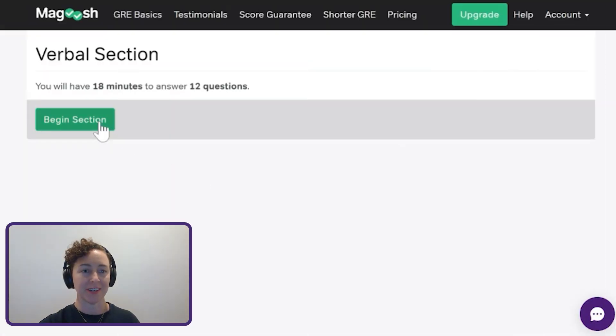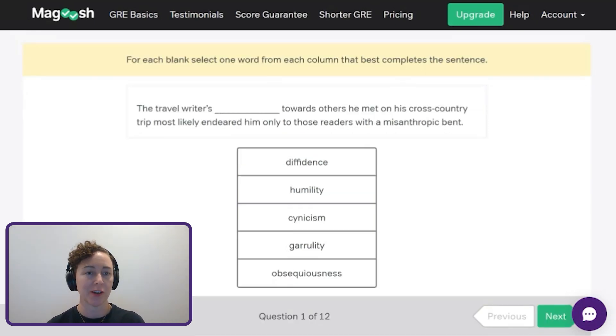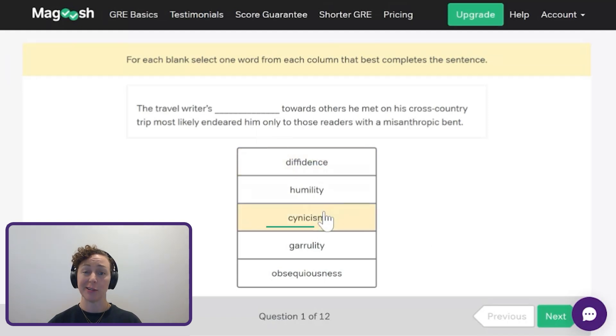Here we go. Ready for the verbal portion. We're gonna begin the section. So we've got a single blank text completion for our first question. The travel writer's blank towards others he met on his cross country trip most likely endeared him only to those readers with the misanthropic bent. So who or what is the sentence about? It's about the travel writer something towards others he met and whatever that thing is endeared him only to those readers with the misanthropic bent. So misanthropy or if you are a misanthrope, then you don't really like other people. So we know that the word that goes into that blank has to be negative. Diffidence, humility, cynicism is looking really good. It's the only one that's really truly negative in this list. Herulity, obsequiousness, gotta be that one. Moving on.